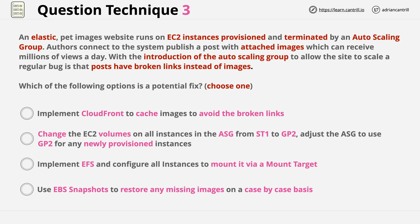These answers are all really interesting because of the radically different solutions, and how the lack of detail in the question makes it essential that you understand the answers completely. Starting with the top answer: it suggests using CloudFront to cache images to avoid broken links. Overall, this is a bad idea. Caching might in the short term avoid issues with the images, but it doesn't address the root cause, which clearly is something to do with either what's hosting the images, where the images are stored, or the images themselves.